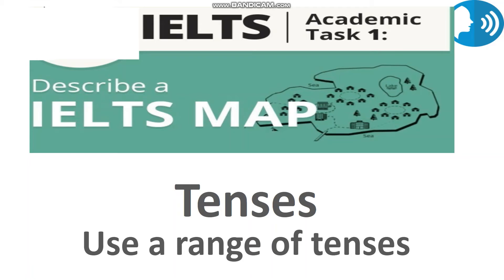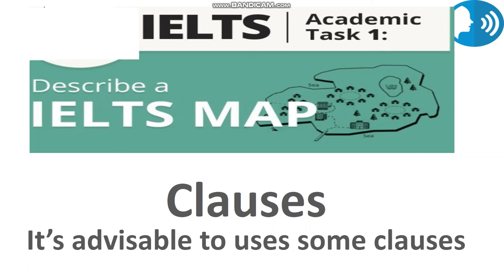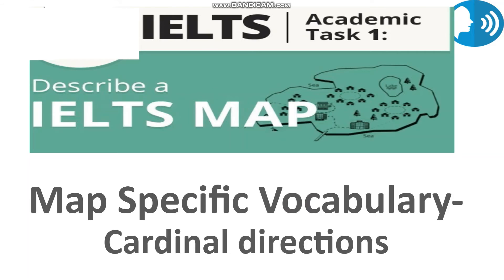Now, regarding clauses — to achieve a higher score in IELTS academic writing task 1, it's advisable to use clauses. For example: 'To the south of the river, a new hotel has been constructed.' Using clauses can really help you impress your examiner.